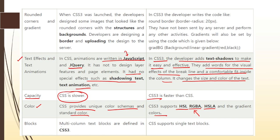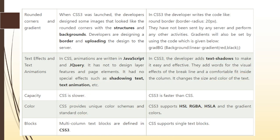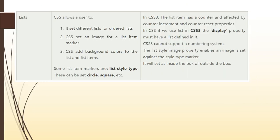Next is blocks. Multi-column text blocks are defined in CSS3 but not in CSS. CSS only supports a single text block. For example, as you can see on the screen, three columns are displayed — that is a multi-column text block. CSS only provides a single-column text block. This difference is one of the most important.